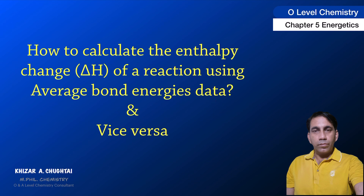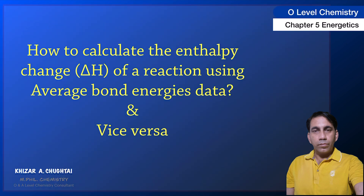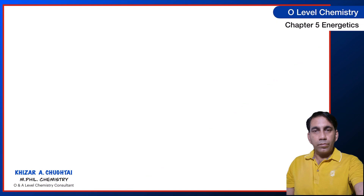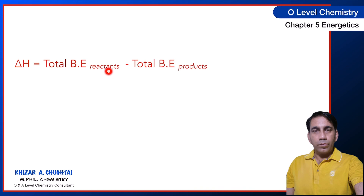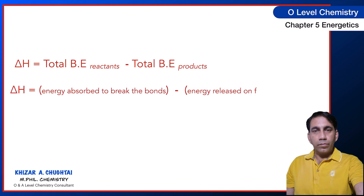Using average bond energy data, and vice versa. If you're having bond energy data then you should be able to calculate the enthalpy change delta H, and if you're having the answer of delta H then you should be able to find the answer of missing bond energies. The basic formula is: delta H is equal to total bond energy of the reactants minus total bond energy of the products, or equivalently, energy absorbed to break the old bonds minus energy released on forming new bonds.